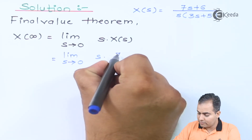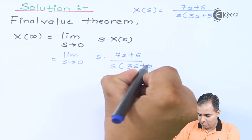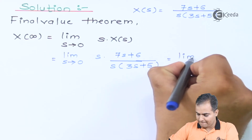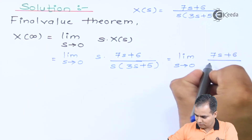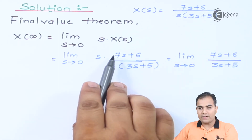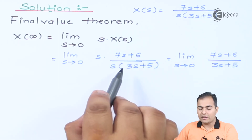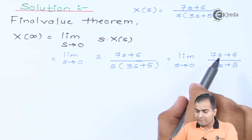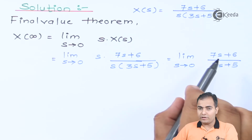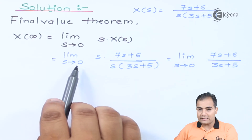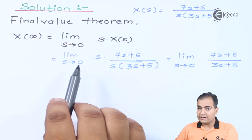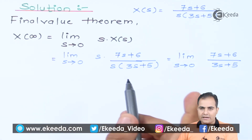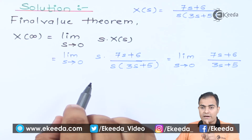The limit as s tends to zero of s times X(s): the two s terms get cancelled, leaving (7s + 6) in the numerator and (3s + 5) in the denominator. Important: in the final value theorem, never take s common, because we are replacing s with 0 and taking s common would give an infinite answer. Directly apply the limit.